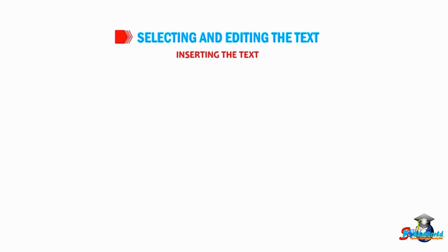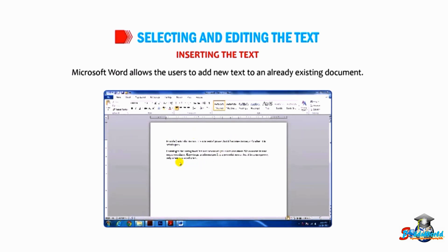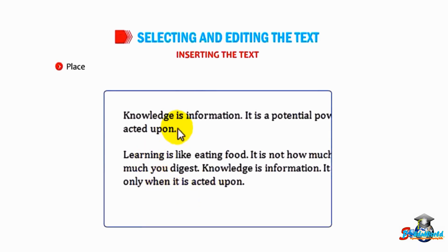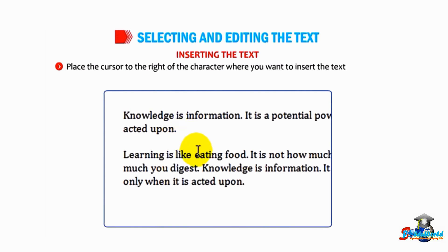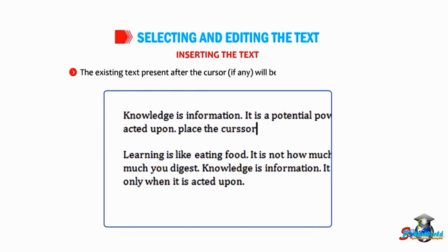Let us talk about inserting text. Microsoft Word allows users to add new text to an already existing document. Place the cursor to the right of the character where you want to insert the text and then start typing. The existing text present after the cursor, if any, will start shifting to the right side.